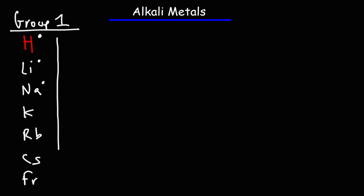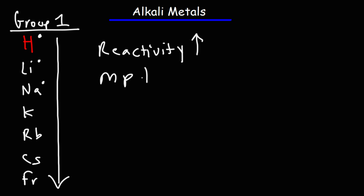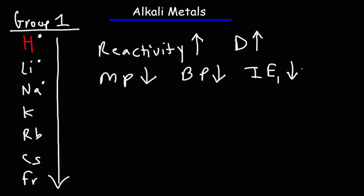As you go down group one, the reactivity of the alkali metals increases — francium is more reactive than cesium, and cesium is more reactive than rubidium. In fact, cesium reacts violently with water. As you go down the group, the melting point decreases and the boiling point also decreases. The density increases as you go down group one. The first ionization energy (IE₁) decreases as you go down the group.